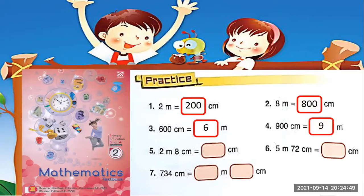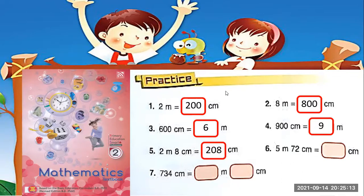Number 4: 900cm equals 9m. Number 5: 2m and 8cm — 2m is 200cm, so 200cm plus 8cm equals 208cm.